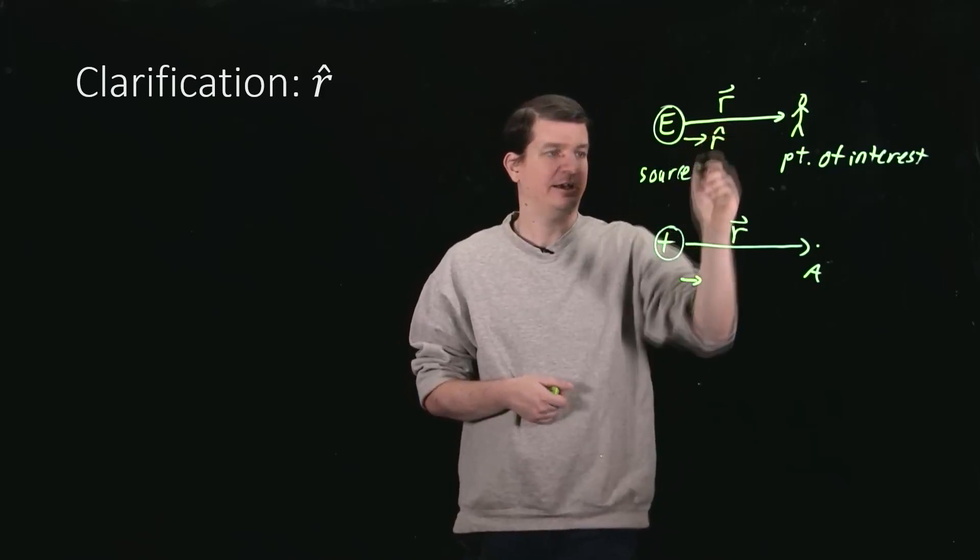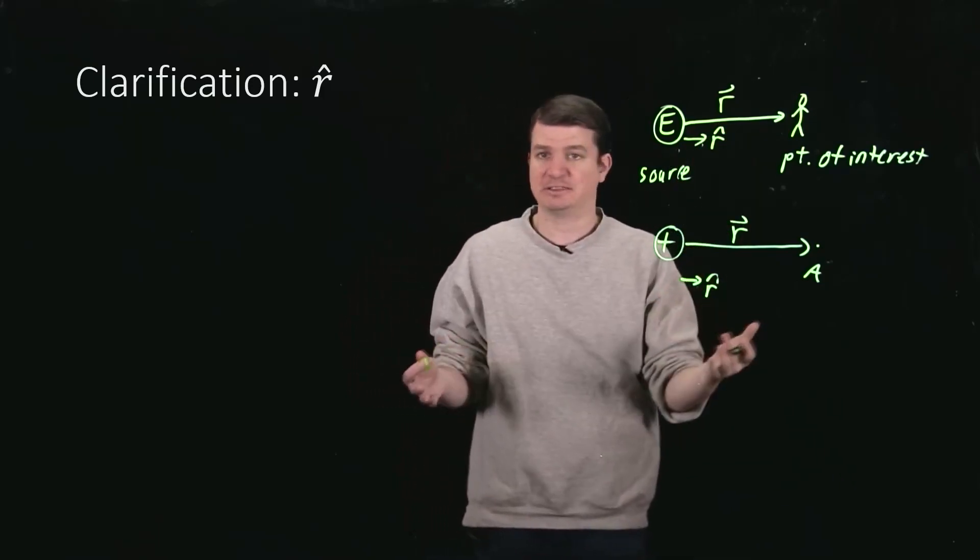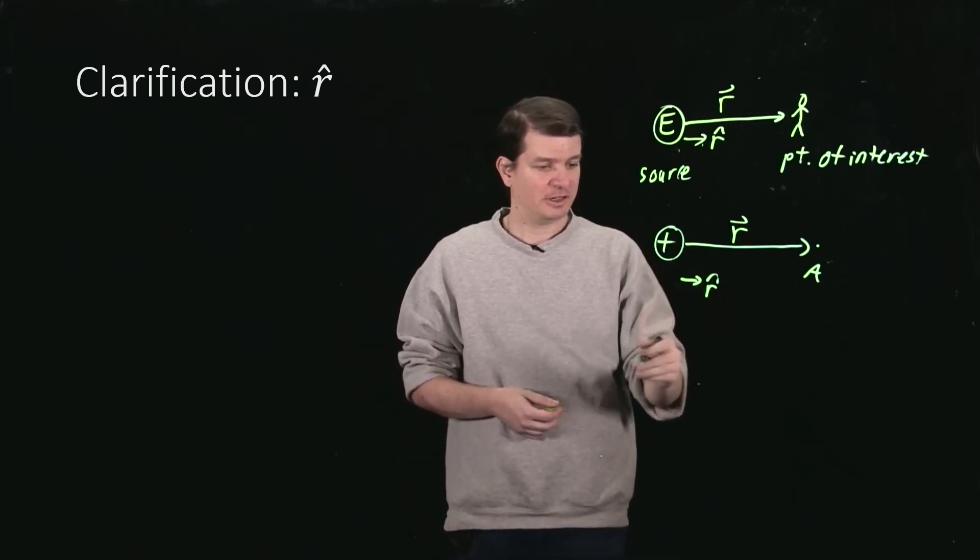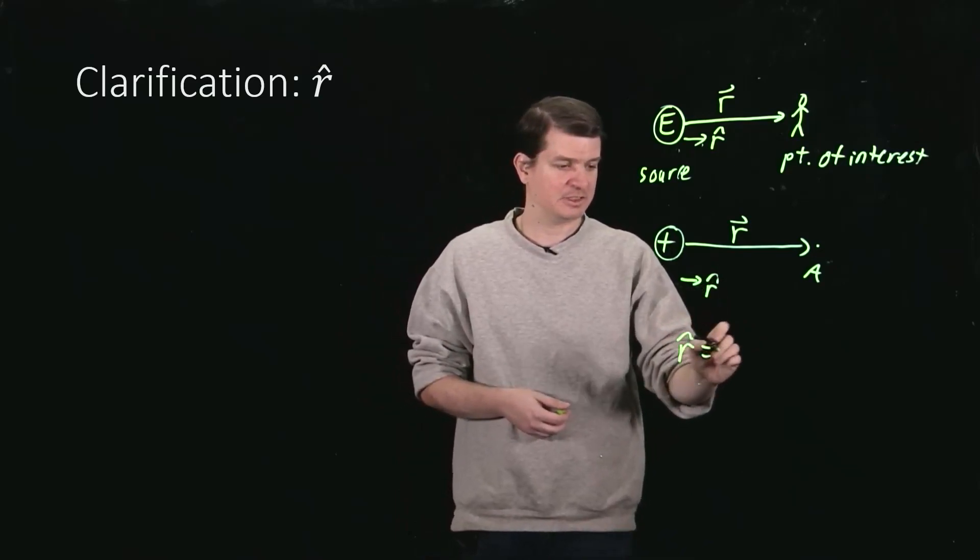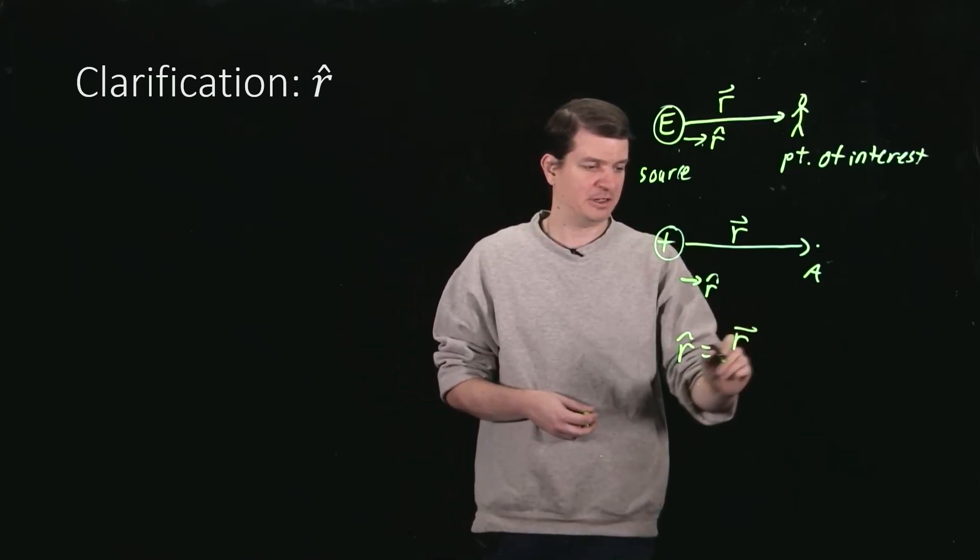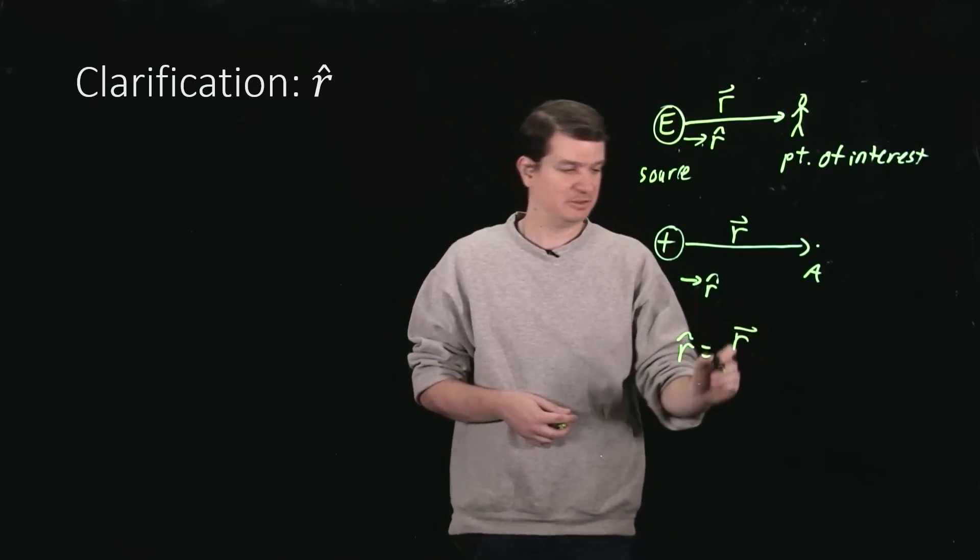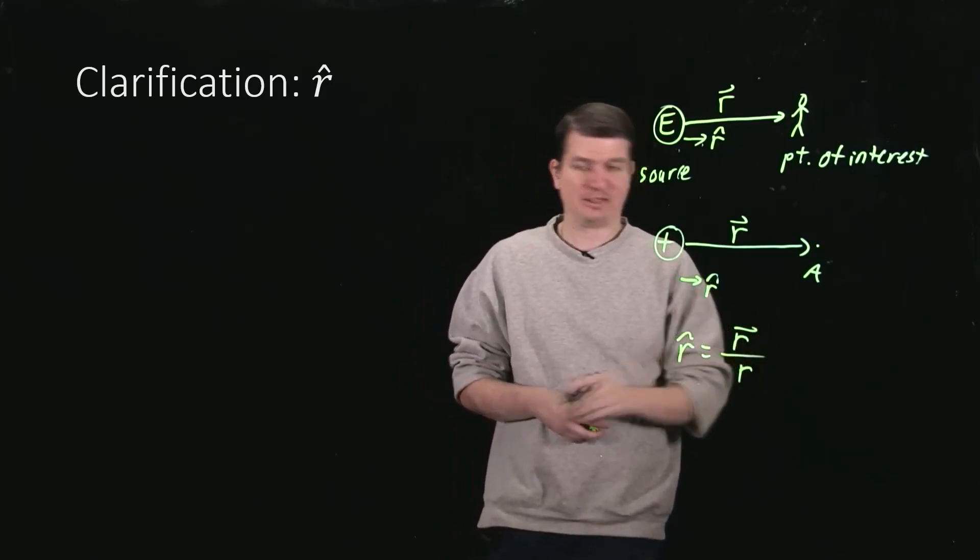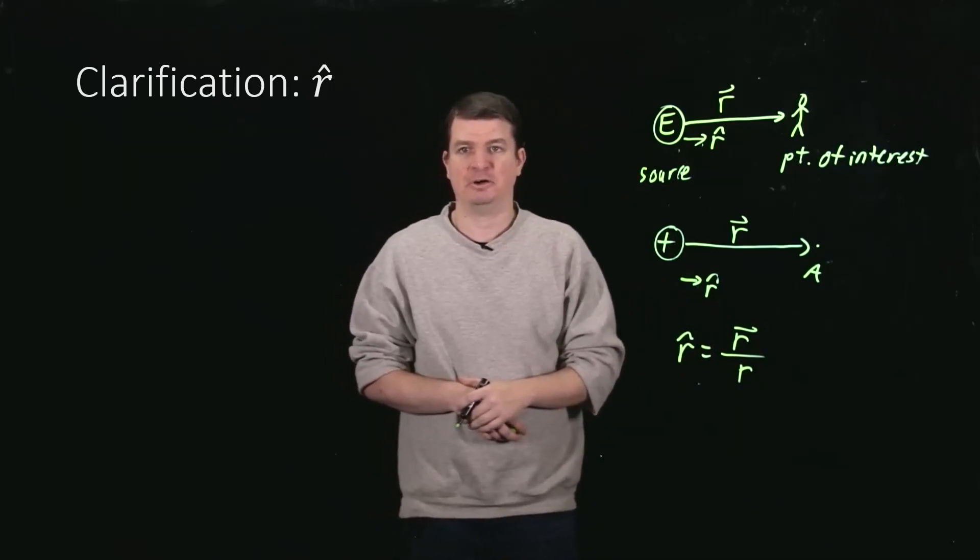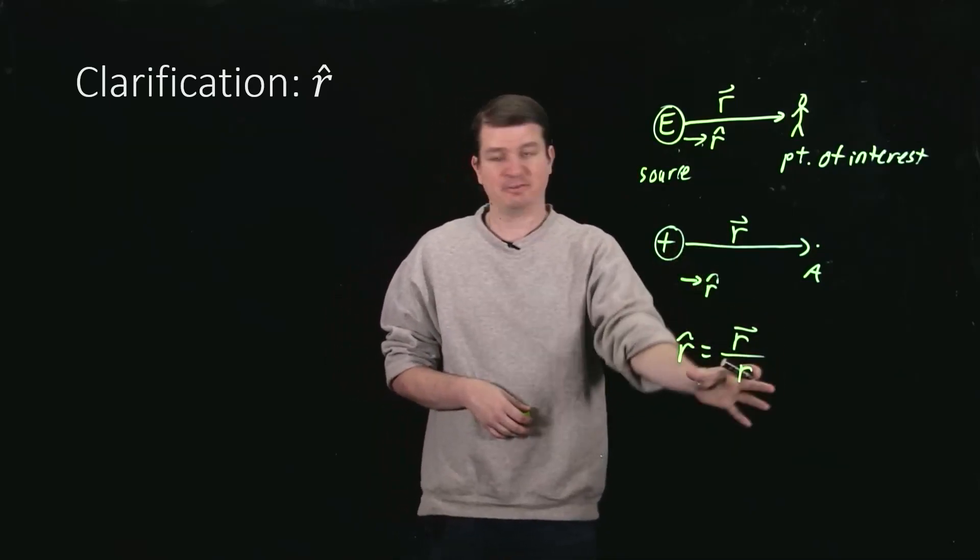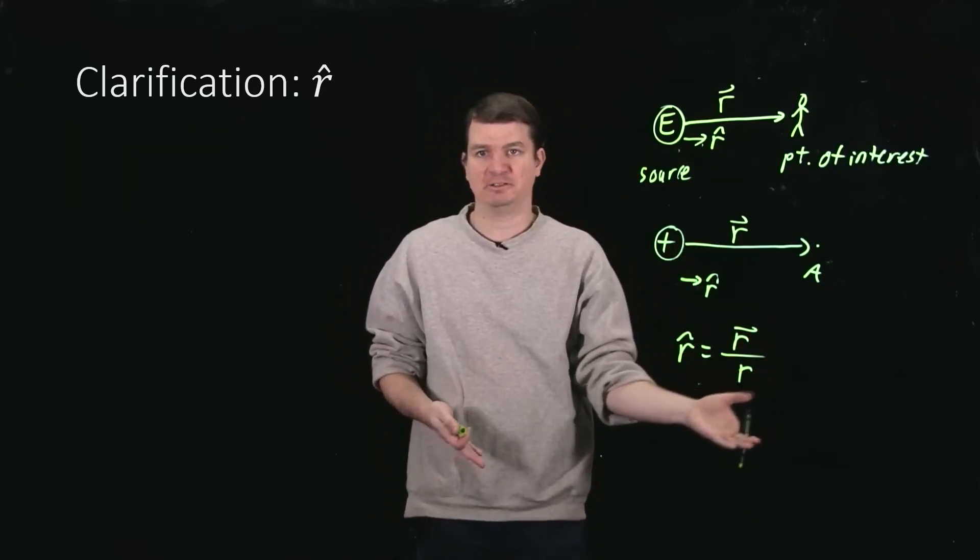So that is my r-hat. Now technically, because it has a length of one, r-hat is actually equal to the vector R, which has both magnitude and direction, just divided by the magnitude of R. This definition is correct, but not very useful.